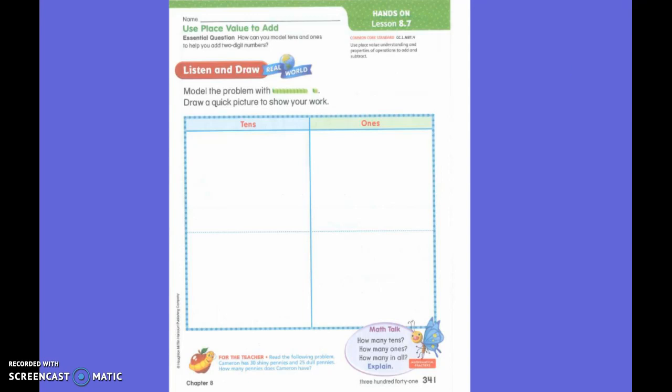We know how to use place value because we've used it before. What place is in the left side? The tens place. You are exactly right. What place is on the right side? Ones. You are very right. So the tens place and the ones place. All my extra ones only go on my right side. All my tens only go on the left side. So this is exactly how we're going to do it today.